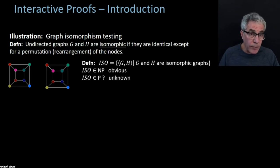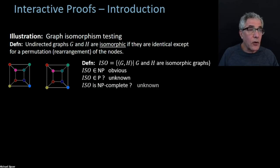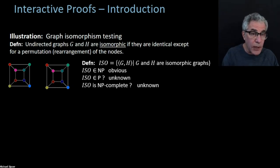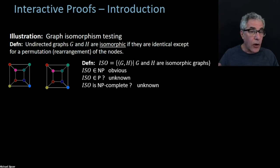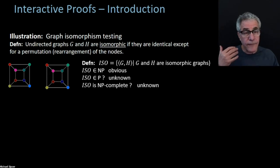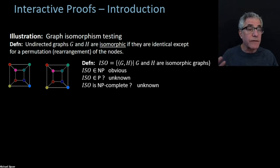Why is there so much attention to this one particular NP problem? It's because it's not known whether the graph isomorphism problem is NP-complete. ISO is not known to be an NP-complete problem, and that puts it into a very small class of problems in NP which are not known to be either in P or NP-complete. It's a curiosity that for NP problems, almost all of them have ended up being on one side or the other. In fact, I think it's the only problem involving graphs that's not known to be either in P or NP-complete.